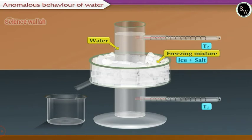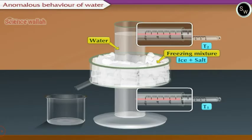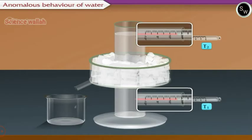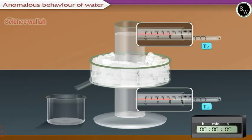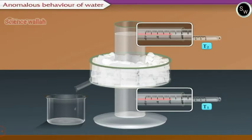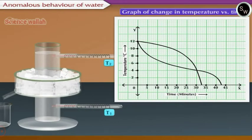As the water is cooled by the freezing mixture, its temperature changes gradually. In the study of anomalous behavior of water using Hope's apparatus, the temperatures T1 and T2 are recorded after every 30 seconds. A graph of change in temperature with respect to time is plotted, with temperature taken on the y-axis and time on the x-axis.